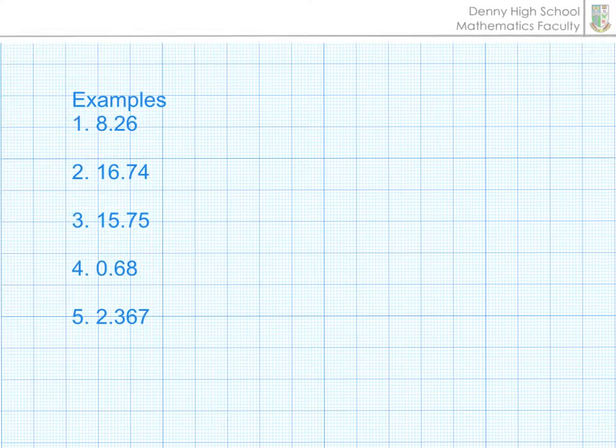When we are rounding a number to one decimal place, we always look at the second decimal figure. In this case, I mean the second number after the decimal point.